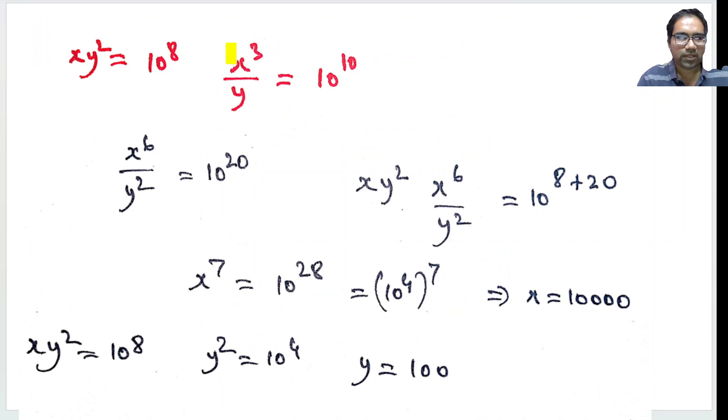So, if you square this one, this becomes x⁶/y² = 10¹⁰ whole square which is 10²⁰.